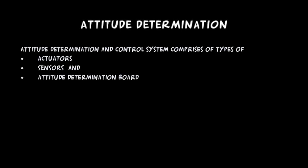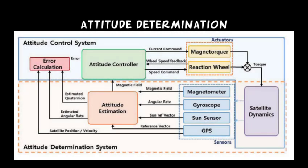The attitude determination and control system comprises types of actuators, sensors, and attitude determination board. As the attitude sensors, sun sensors and magnetometers are selected, and MEMS gyroscope was chosen as the inertial sensor. The actuators are three external reaction wheels and three magnetic torquers.